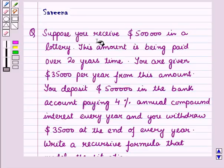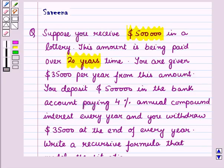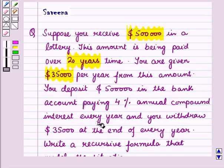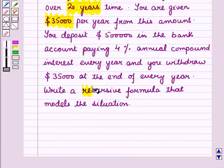Hello and welcome to the session. In this session we will discuss a question which says that suppose you receive $500,000 in a lottery. This amount is being paid over 20 years time. You are given $35,000 per year from this amount. You deposit $500,000 in the bank account paying 4% annual compound interest every year and you withdraw $35,000 at the end of every year. Write a recursive formula that models the situation.